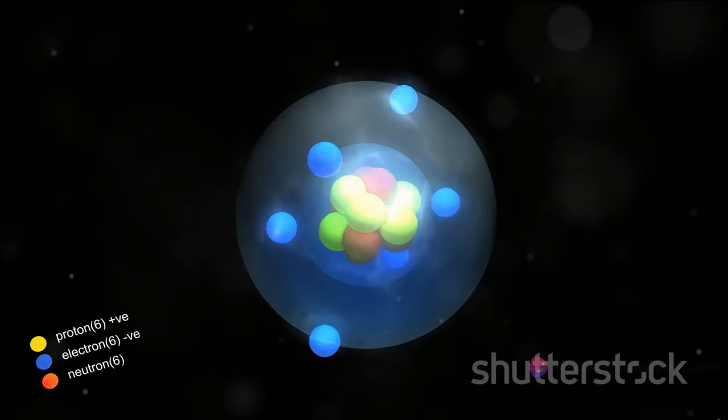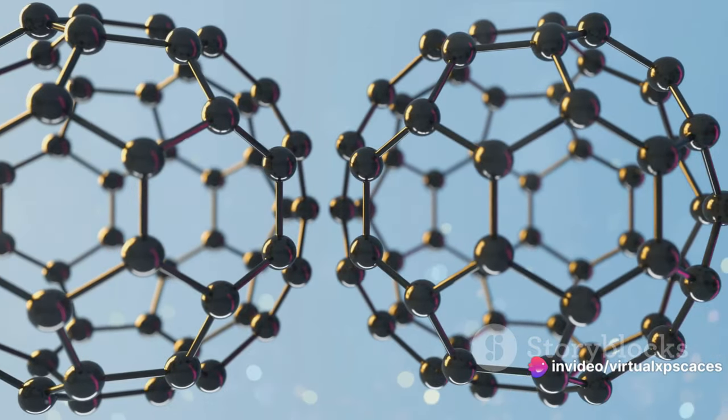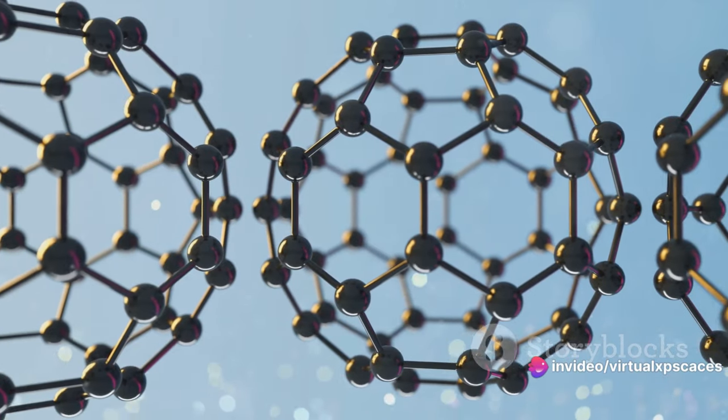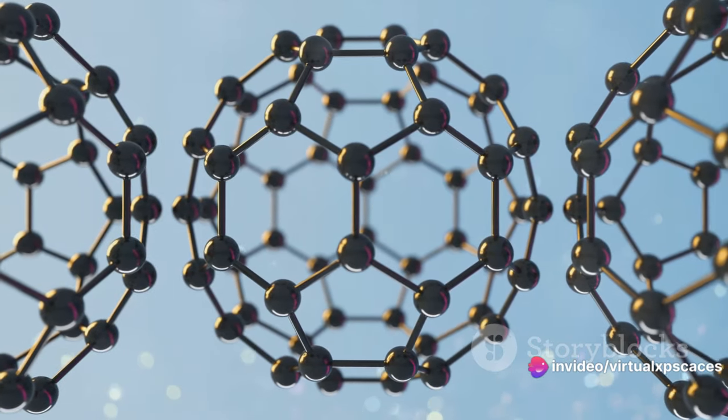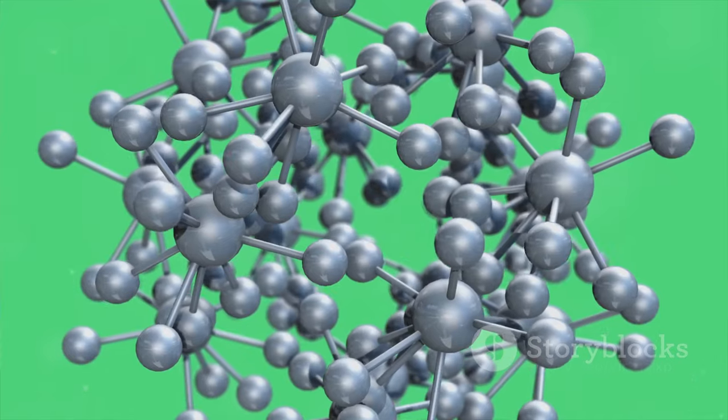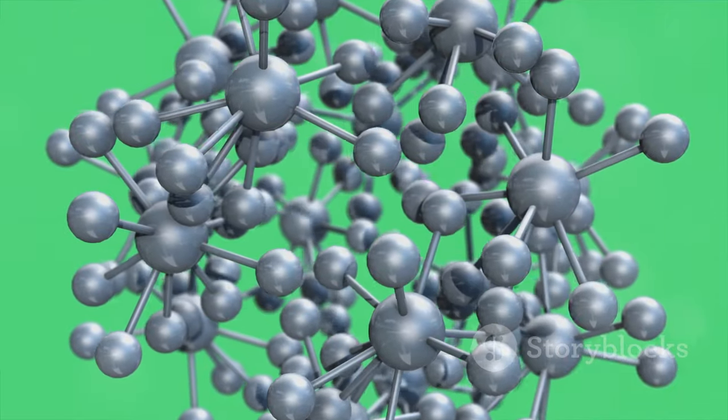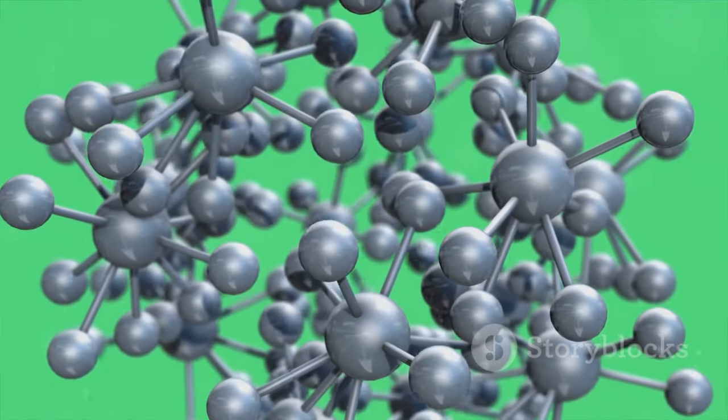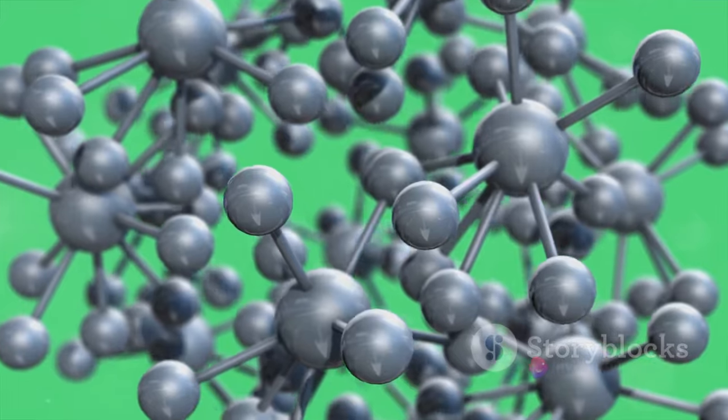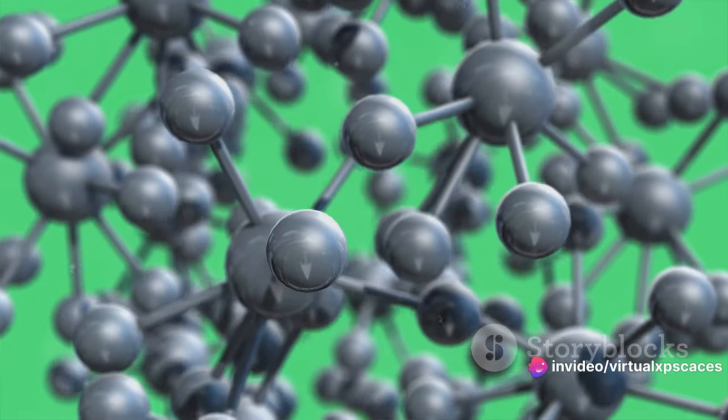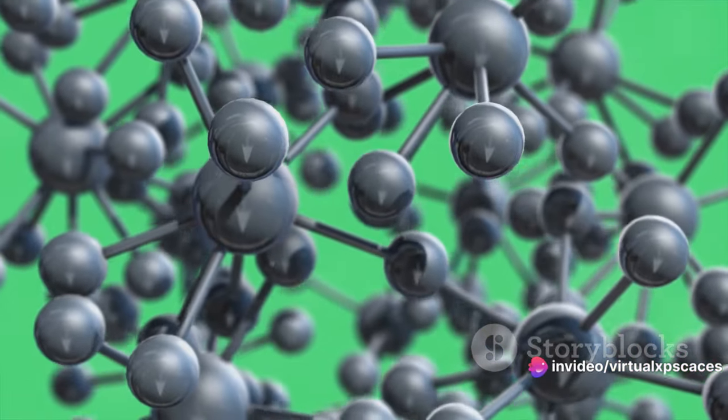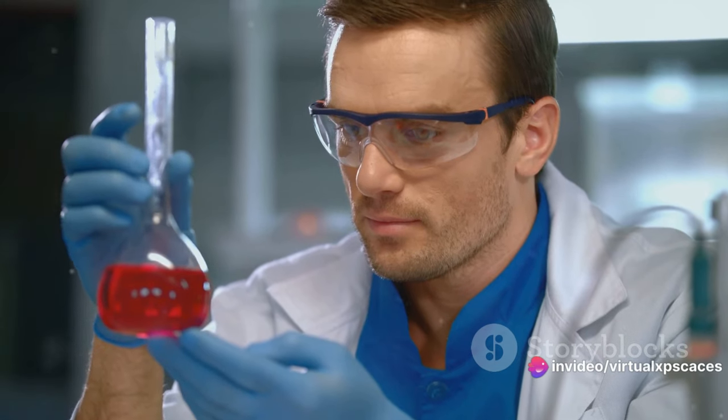Following assembly, we have the creation of complex structures. This is where things really start to get interesting. The atomic structures we've assembled are used as building blocks to create larger, more complex structures. Imagine using Lego bricks to build a castle, each brick representing an atomic structure. It's a similar concept, but on a nanoscale.